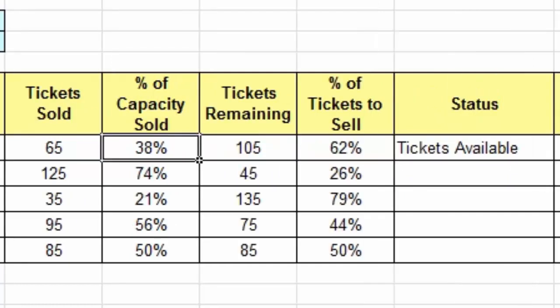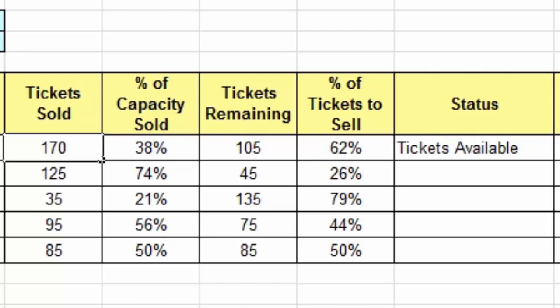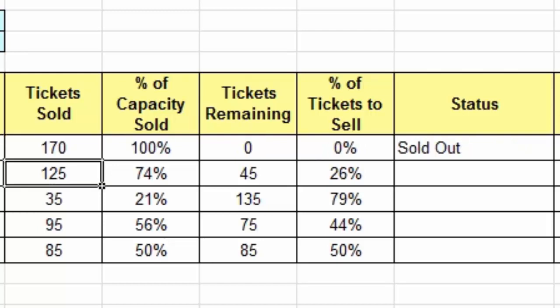If I go back to cell C7 and it does happen to sell out — we reach our capacity of 170 — the status message changes to read sold out. So a basic IF function can deliver one of two outcomes: either a true outcome or a false outcome.